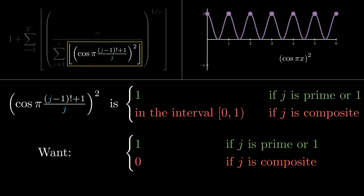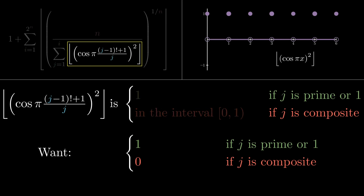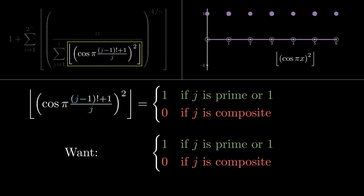Then we take the floor. This leaves the 1s alone and collapses everything else to 0. So we get our improved prime detector that outputs 1s and 0s. It's 1 if j is prime or 1, and 0 if j is composite. Isn't it beautiful that this is possible?